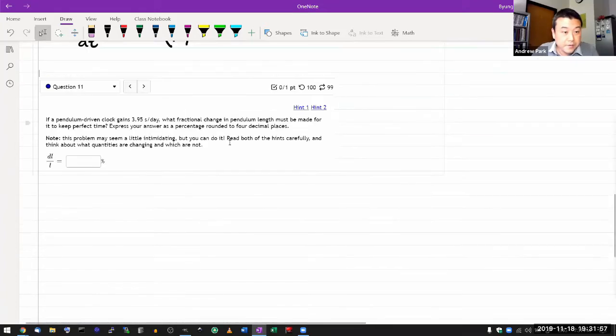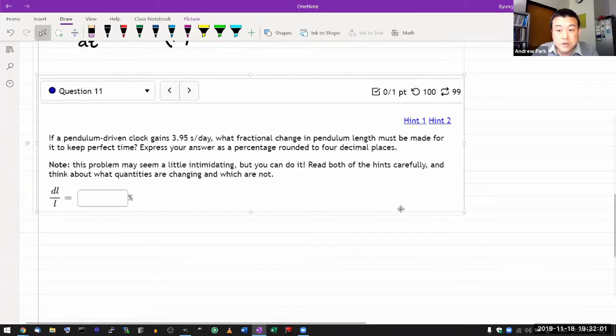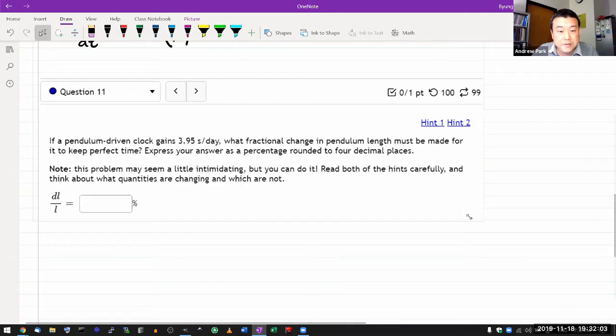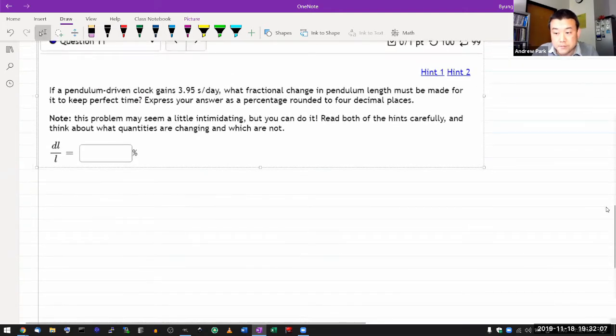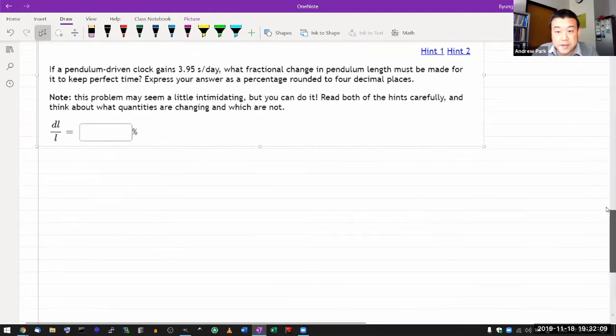Okay, question 11. If a pendulum-driven clock gains 3.95 seconds a day, what fractional change in pendulum length must be made for it to keep perfect time?